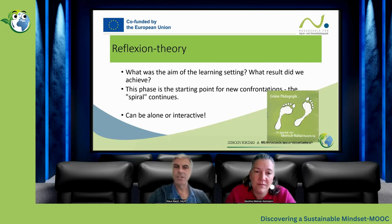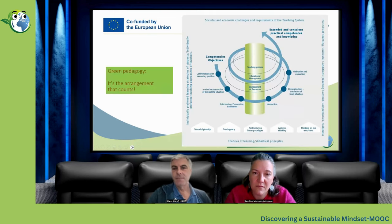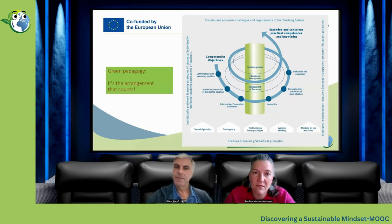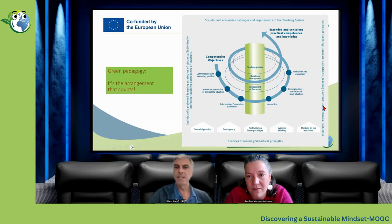The last point is the reflection theory. What was the aim of the learning set? What results did we achieve? This phase is the starting point for new confrontations — the spiral continues. We have not one answer, we have many answers, and it can be done alone or interactively. You see now the spiral: every point of the spiral includes confrontation, then reconstruction, then new construction, then interaction and deconstruction, and at last we have new motivation to change some things and have new ideas for answers.